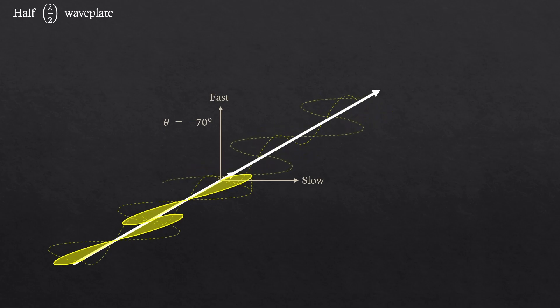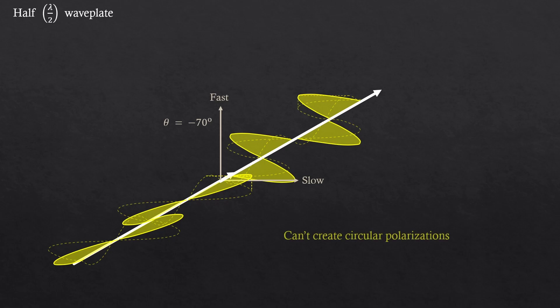Then shift the slow component by half of the wavelength. I'm going to show it again. Now, look. The polarization changed, but it's still a linear polarization. This way, we could never create a circular polarization regardless of the rotation. Does it now make sense?